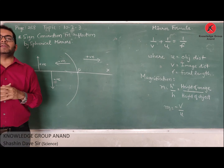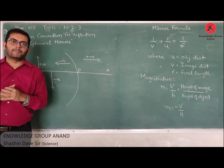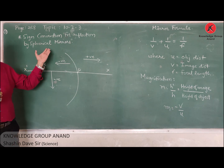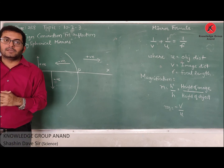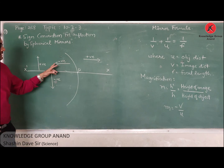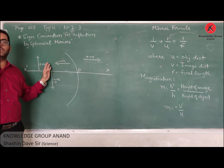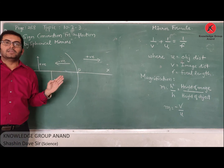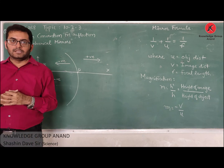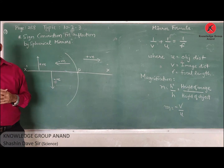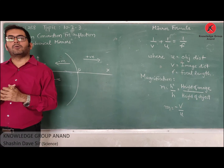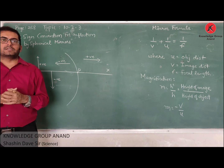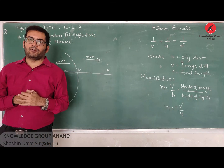These sign conventions are important in two ways: you might get a theory question asking you to explain the sign convention for reflection of spherical mirrors, which may be asked for three marks. Knowing which terms are positive and which are negative will also be helpful when solving numericals using the lens formula and mirror formula.